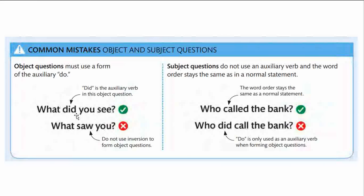'What did you see?' — the verb is in base form. This is the correct formation for an object question; 'did' is essential. For subject questions, do not use an auxiliary verb — the word order stays the same as a normal statement. 'Who called the bank?' is correct. 'Who did call the bank?' is completely incorrect in subject questions. 'Do' or 'did' is only useful when forming object questions, not subject questions. The word order 'who called the bank' mirrors a statement — only the name is replaced with the question word 'who' and a question mark is added.